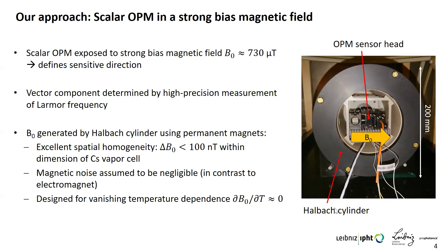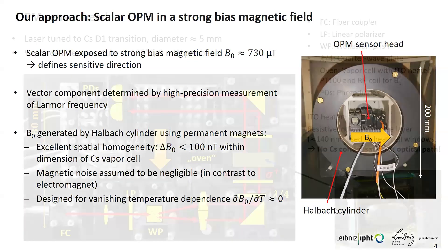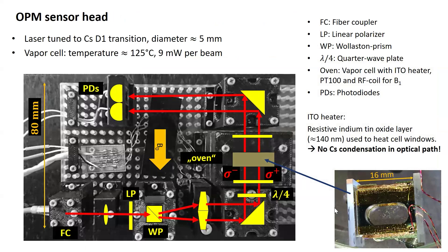The OPM sensor head is placed in the center of this magnetic field generating system. We use an external LED laser coupled to the sensor head via an optical fiber. A collimation lens collimates the beam to about five millimeters in diameter. A combination of a linear polarizer and a Wollaston prism splits the beam into two sub-beams with orthogonal polarization. By rotating the linear polarizer, we can balance the intensities of the two sub-beams. Wedge prisms align the beams, and after passing a quarter-wave plate, we obtain two beams with circular polarization of opposite helicity.